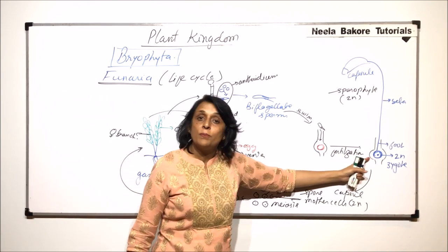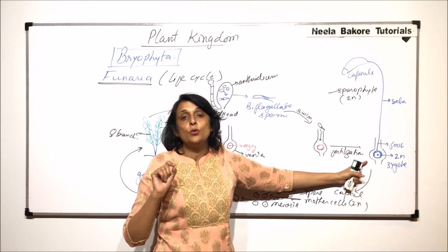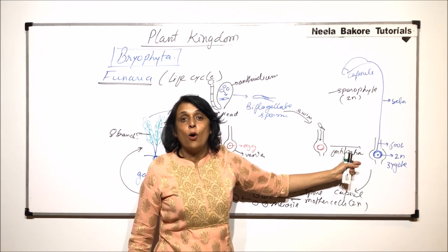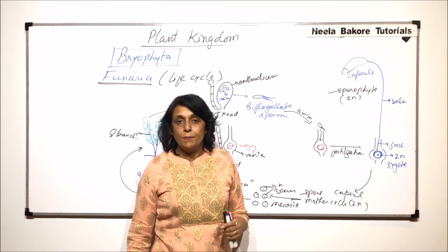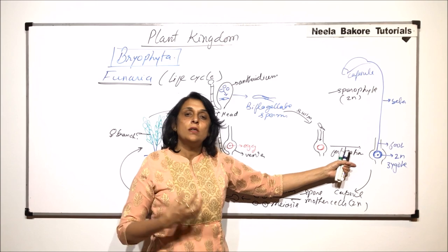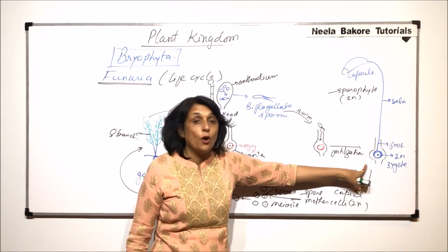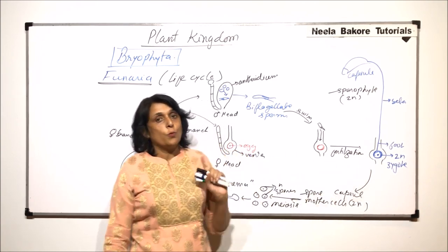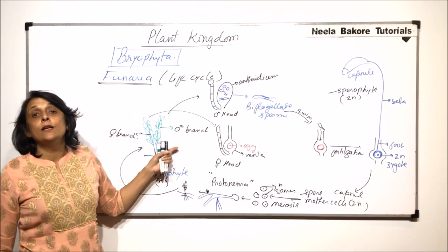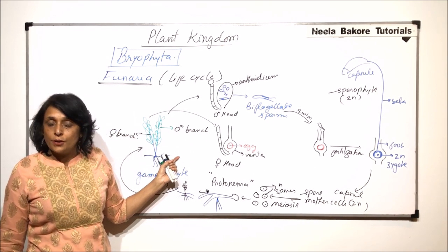Sporophyte, as it develops from the zygote, it is always going to grow on the female branch. And it is dependent on the gametophyte because this is the place where it is attached to and it is going to obtain all its nourishment, water, everything from the gametophyte. So sporophyte is not independent in case of Funaria and it shows alternation of generation.